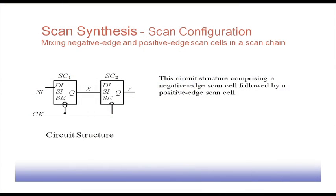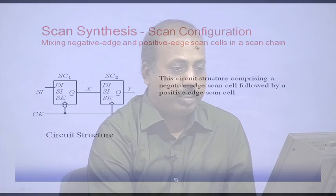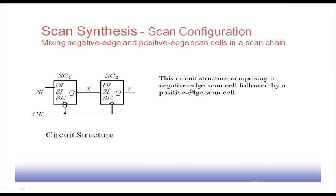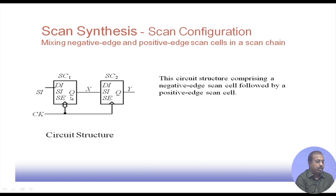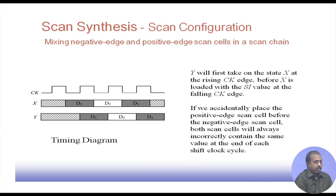In scan synthesis, one stage is scan configuration. When mixing negative edge and positive edge signals, positive edge scan cells are placed in a scan chain. The circuit has a negative edge scan cell followed by a positive edge scan cell. After the negative edge has come, the value is set to a proper value, and then at the positive edge, the value can be sensed by the next scan cell — so they need to be grouped this way.